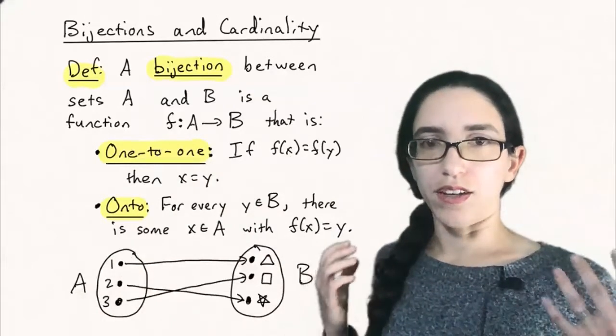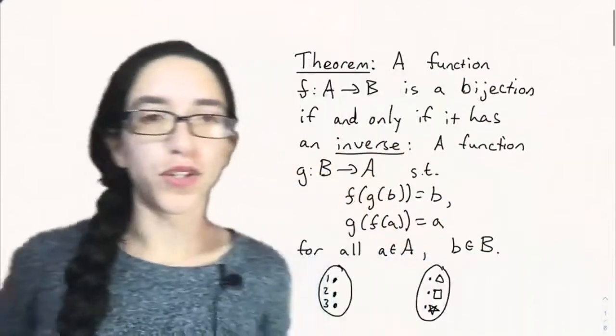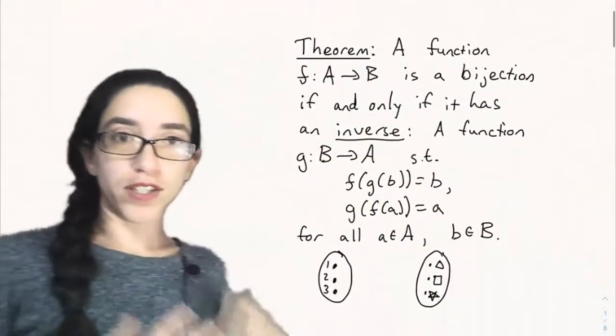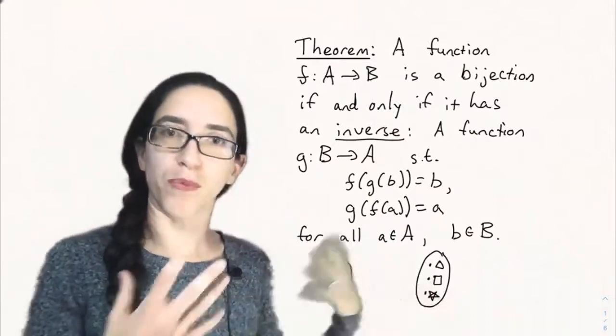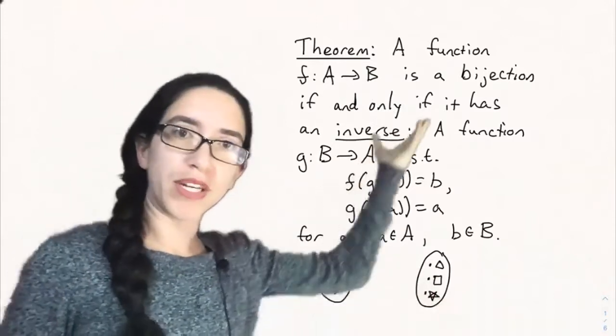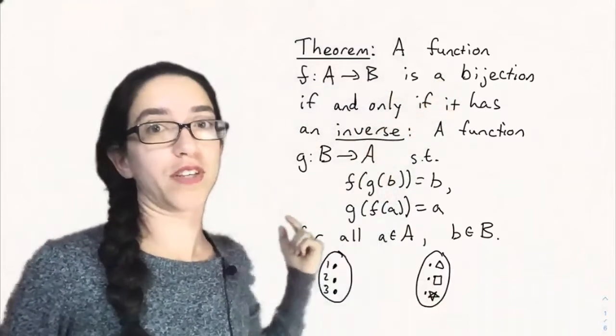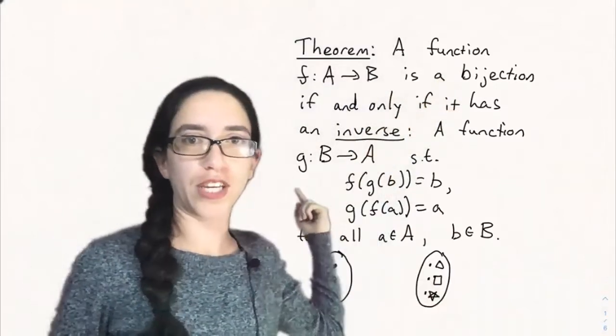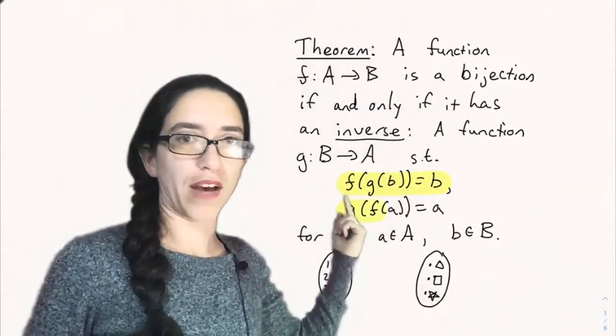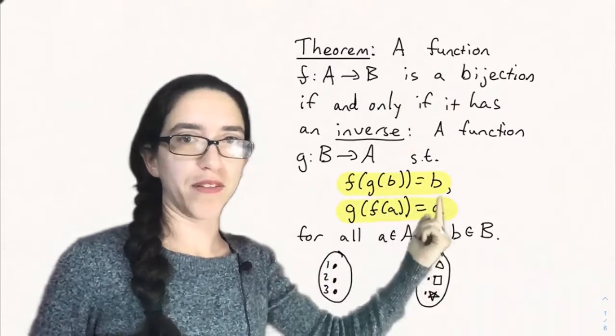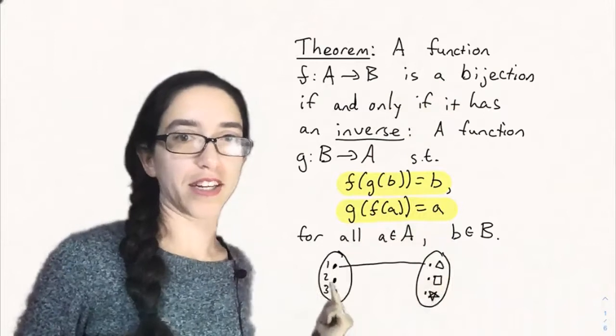Now let's look at an important theorem about bijections that's useful in proving a lot of facts about them and also useful in knowing when you have a bijection between two sets. An easy way to tell is that F is a bijection if and only if it has an inverse. And an inverse is a function g from B to A that reverses the map. So f(g(b)) equals b for any b in here and g(f(a)) equals back to a for any a in here.